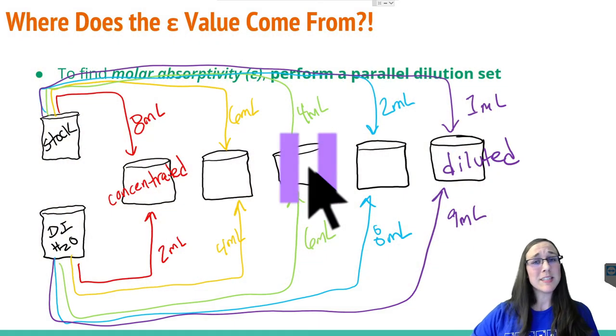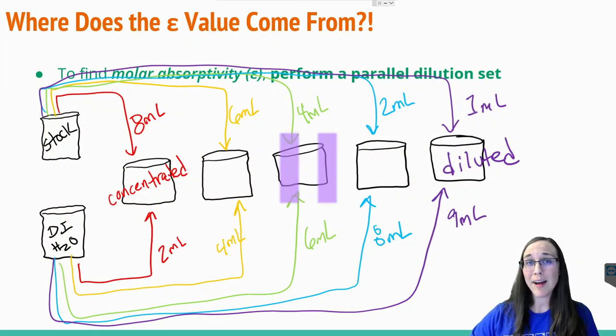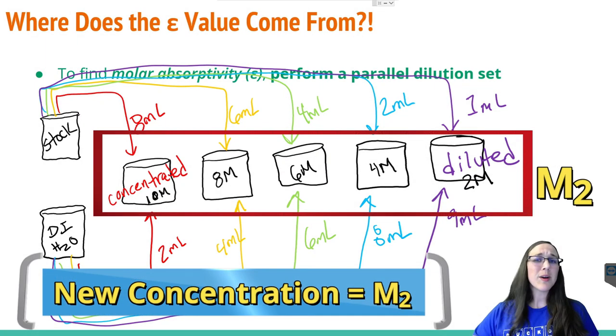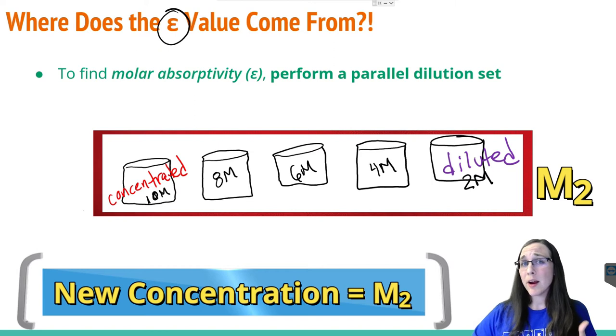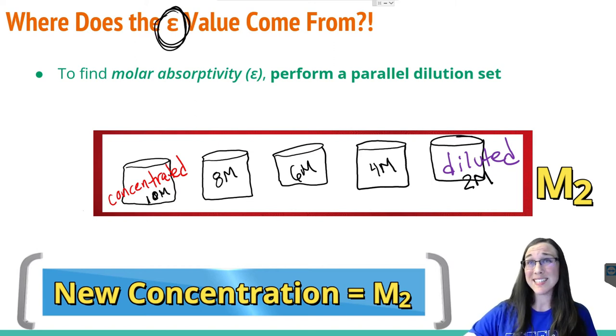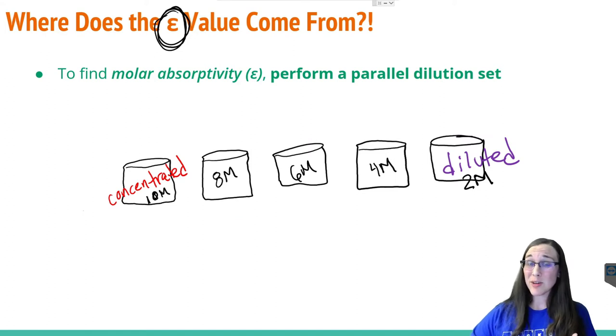Let's just hypothetically pretend now that the beakers below have these concentrations. So what can we do with these different hypothetical concentrations now? Well, now that we have the concentrations from our parallel dilution set, we still need to figure out what this epsilon value is. In order to get that epsilon value, I'm going to need to make a calibration plot.